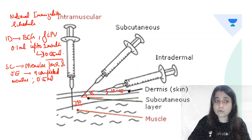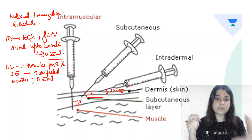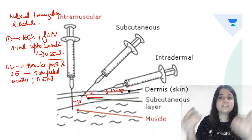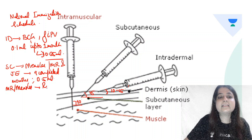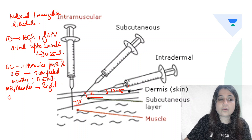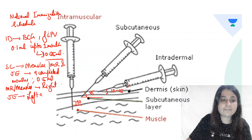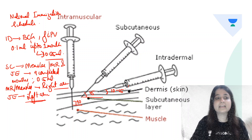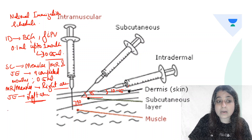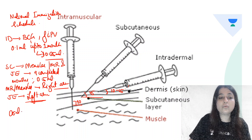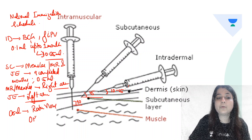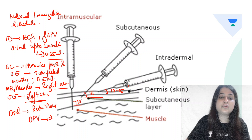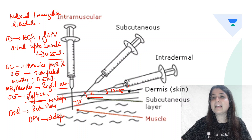Measles-rubella vaccine is given in the right arm, and Japanese encephalitis is given in the left arm. For the oral route, there are 2 vaccines: rotavirus vaccine and oral polio vaccine. Oral polio vaccine is given as 2 drops and rotavirus vaccine as 5 drops.